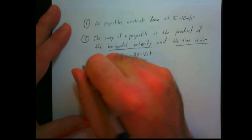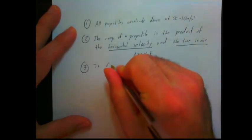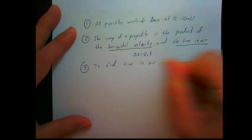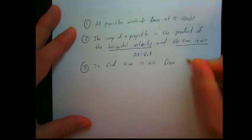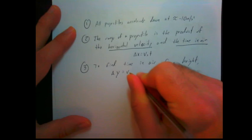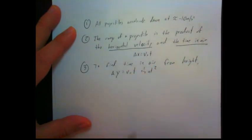And number three, to find time in the air from height, all we have to do is use delta y equals v_i t plus 1 half a t squared. And if it's fired horizontally, that v_i will be 0, right? Because this is a vertical equation.